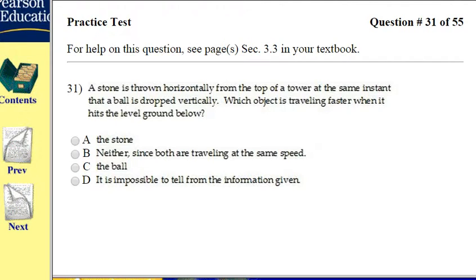All right, so look at this one. Problem number 31. Up here, pay attention, guys. Problem number 31 says that a stone is thrown horizontally from the top of a tower. At the same instant the ball is dropped vertically, which object is traveling faster when it hits the ground?